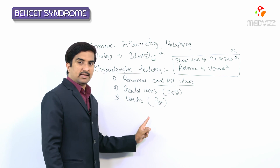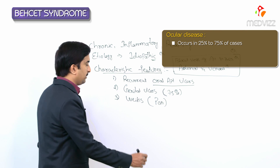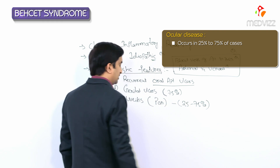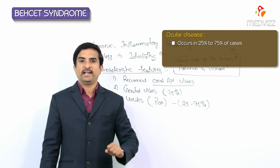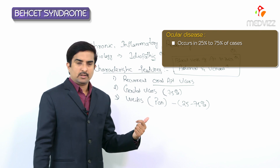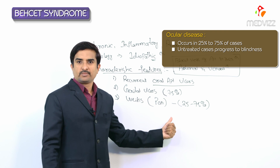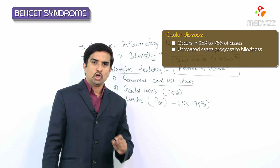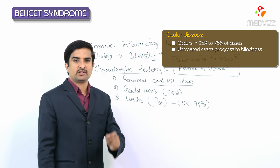Ocular disease occurs in approximately 25 to 75% of Behçet's patients, depending on race — it is more commonly seen in whites than blacks. Majority of cases presenting with uveitis progress to blindness if not treated. Ocular disease is typically less severe in North American populations, resulting in lower incidence of vision loss, but elsewhere vision loss is more common.